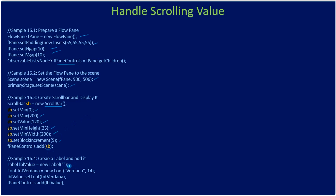Then we create a label, set a Verdana font size 14, and add it to the FlowPane control. So the FlowPane contains two nodes: one is the scroll bar and the other is this label, which we will use to report the scrolling value.